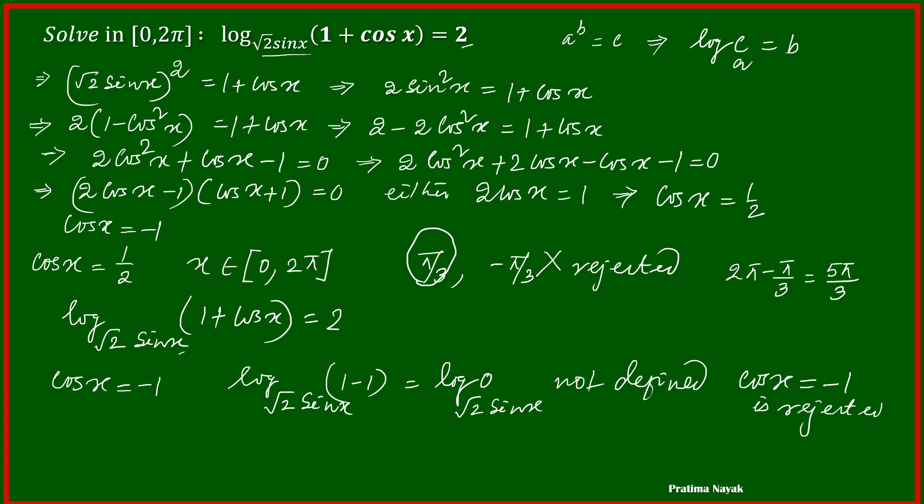What is the final solution? Final solution is only π by 3. x equals π by 3 is the solution.